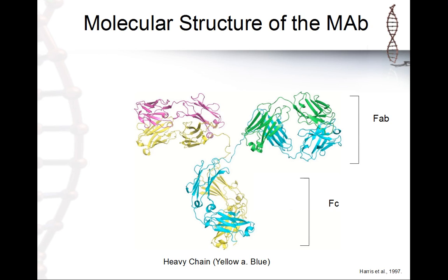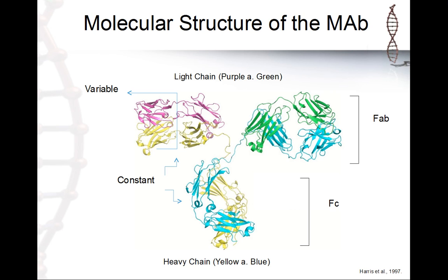We also have a light chain shown in purple and green. Of course we have a constant region where we always have the same sequence, and definitely a variable region where it changes to target a specific epitope — which is quite important.